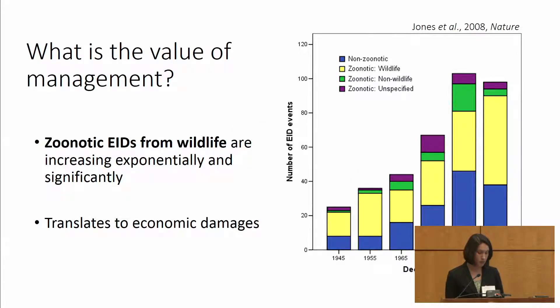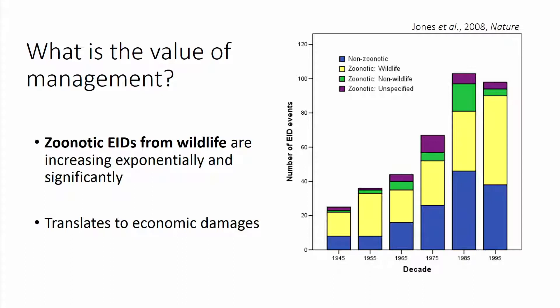Zoonotic emerging infectious diseases may be one area where we can use a One Health framework to assist in preventing future events through early detection and rapid response, but also through preventing that infection from occurring in the first place. Just over the past half century, we've observed a rise in the number of zoonotic emerging infectious disease events, specifically the number that have emerged from wildlife sources. Using a One Health framework that targets these specific sources of risk — not only animals, but wildlife and potentially even livestock — may have some benefit in terms of a cost-effective strategy.